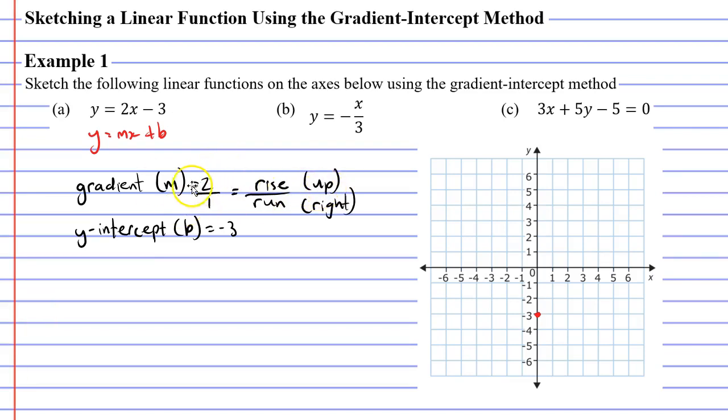So we're going to move up two squares and then to the right one square. We'll start at our point here and go up two squares and right one square. That now gives us our second point. Once you have your two points you simply draw a line that passes through them.